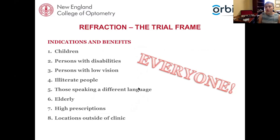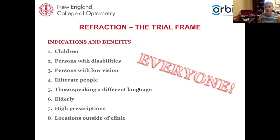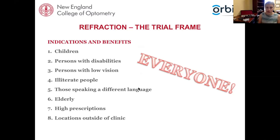Trial frame refraction is also really useful for patients with disabilities — mental or physical — as they can see your facial expression and communicate with you, and you don't need to position a phoropter. It's great for low vision patients, people who speak a different language, and patients with high prescriptions, because you can control the vertex distance closely. The best thing I love about trial frame refraction is that every patient suits it, but not every patient suits a phoropter.